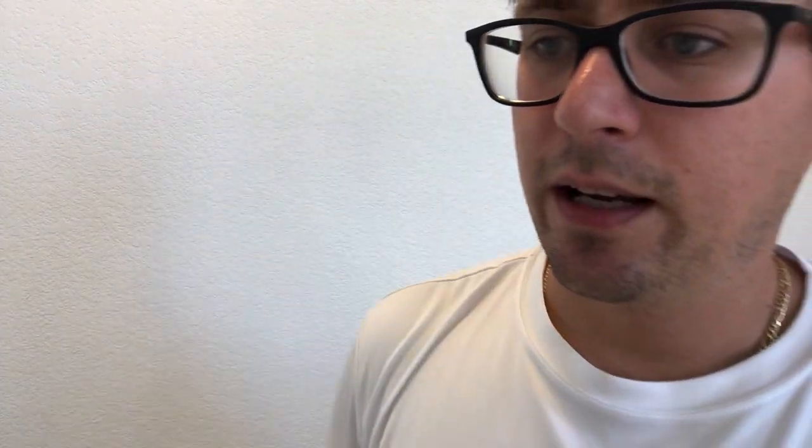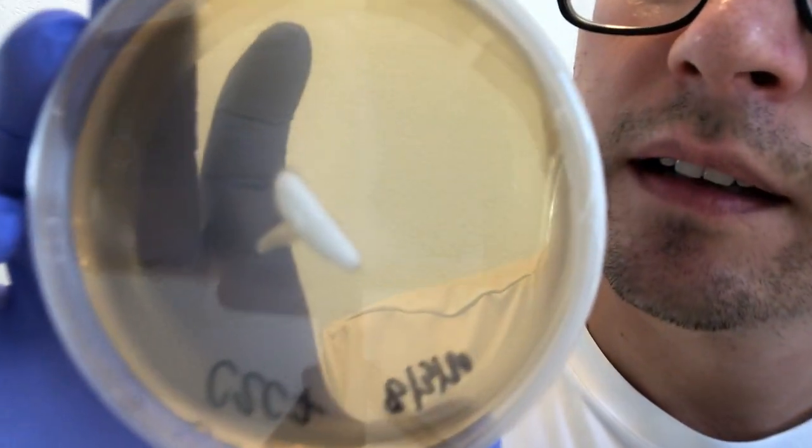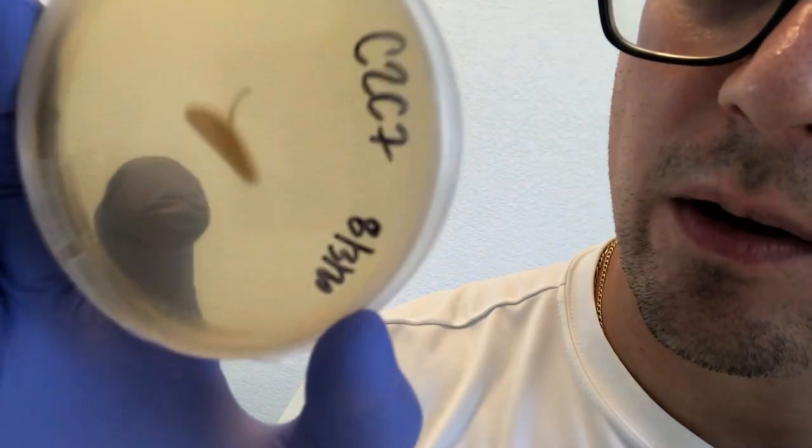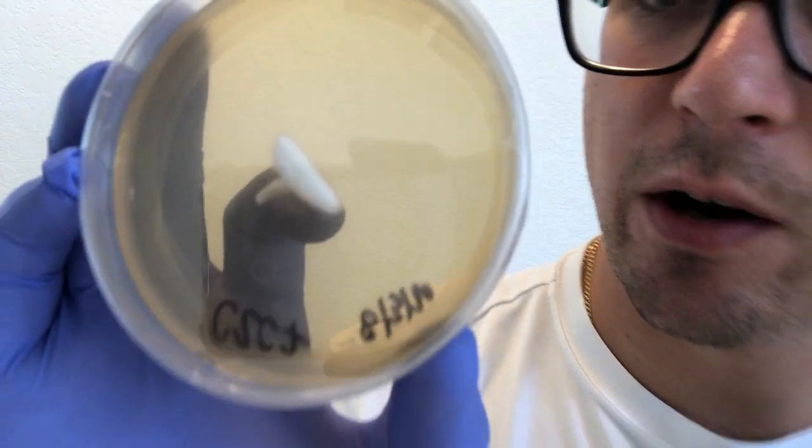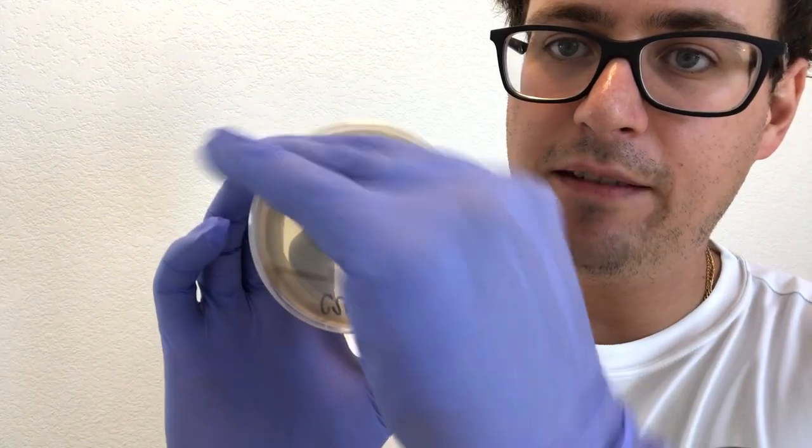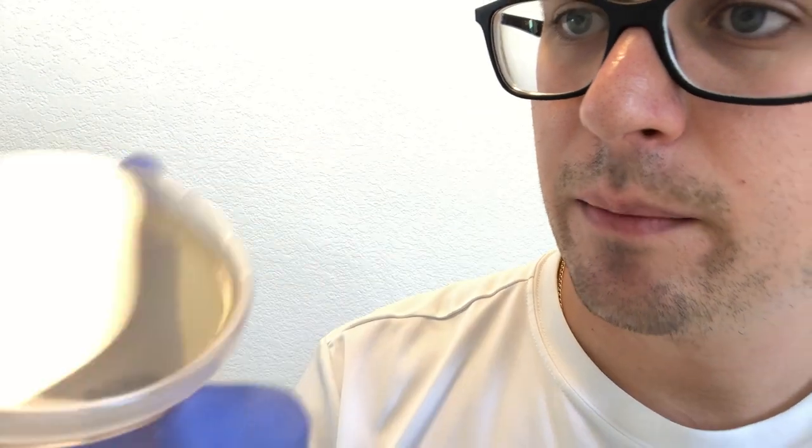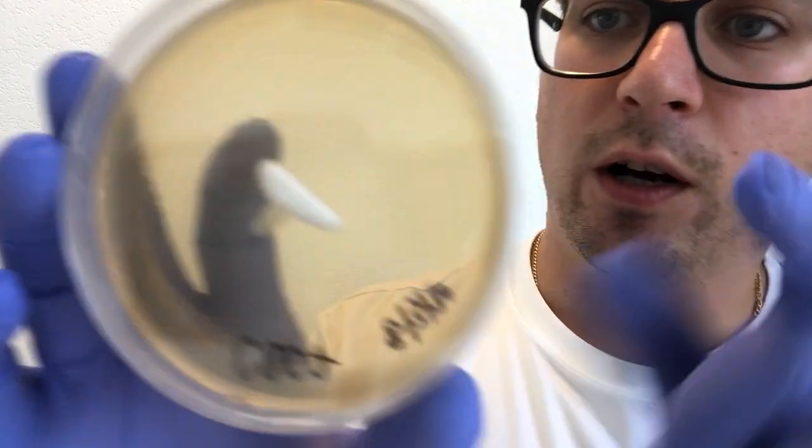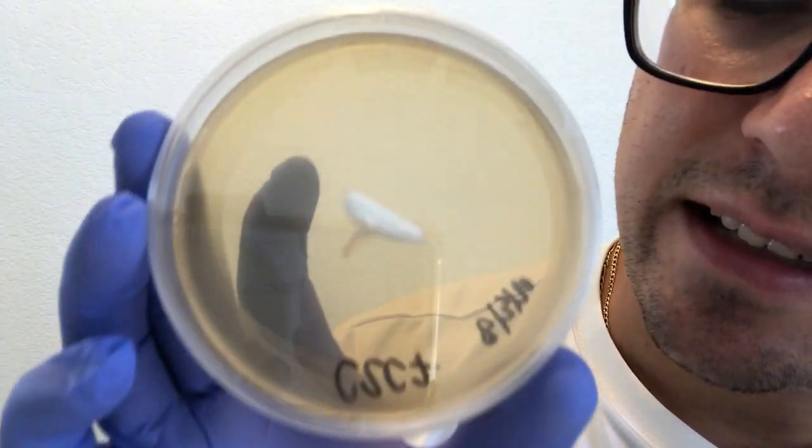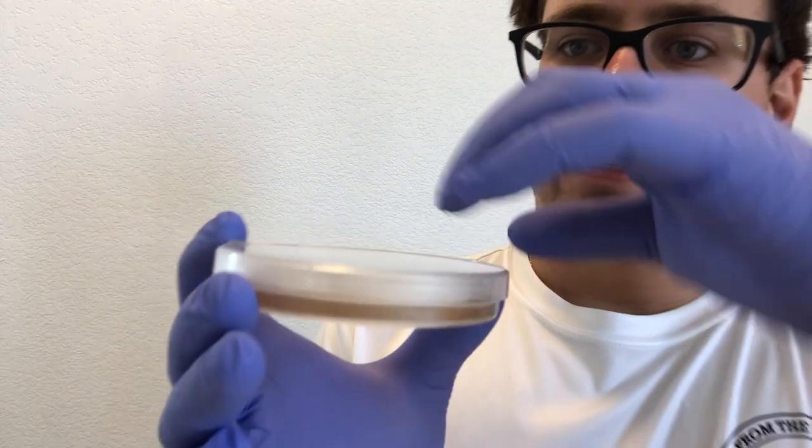This right here is cordyceps. You can see how dense and cottony it is—it's got a really cottony growth, a nice even edge, pretty flat or slightly raised form. That is really what you're looking for, ideal for cordyceps. As it's exposed to light, cordyceps will start to turn orange. That's a feature for cordyceps mycelium.